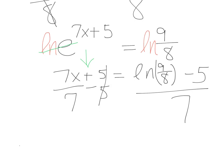Okay, so now all I have to do is key this part into the calculator. Let's go ahead and do that and see what we get. So we get x equals the natural log of 9 eighths minus 5, and then all of that divided by 7.